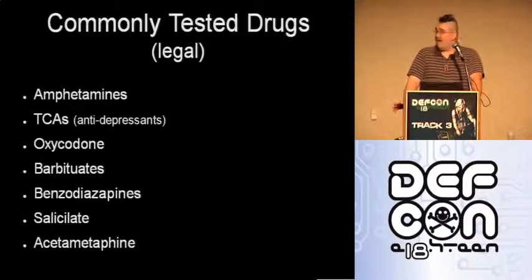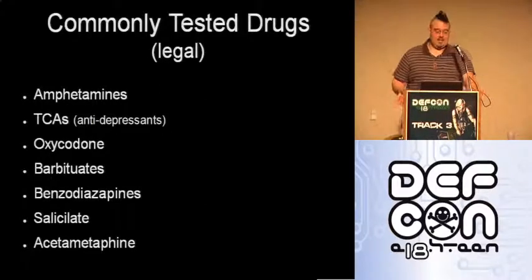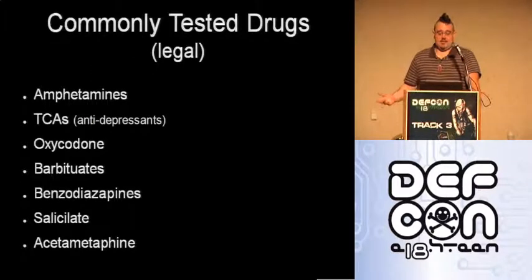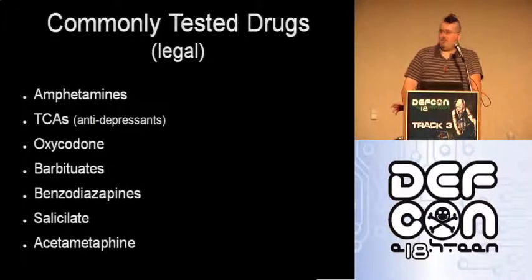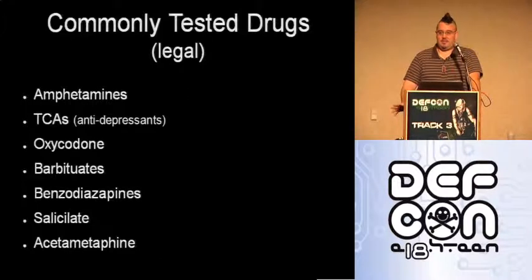Commonly tested drugs: amphetamines, TCAs (antidepressants), oxycodone, barbiturates, benzodiazepines, salicylates, and acetaminophen — basic painkillers like ibuprofen and Tylenol. Amphetamines can range from methamphetamine like ecstasy or ice to simpler things like Ritalin or even diet pills at lower levels. That's why GC-MS is so important — it won't just say 'amphetamine,' it'll say which specific amphetamine it is.